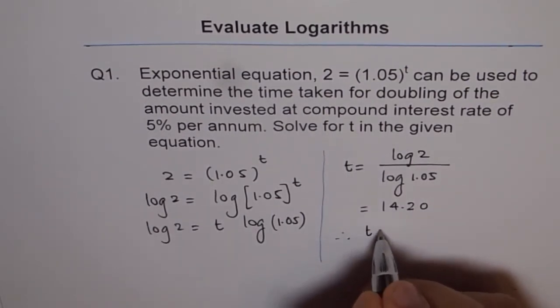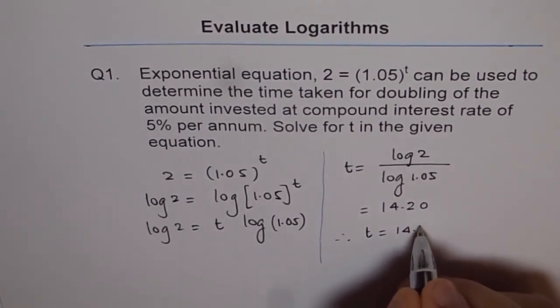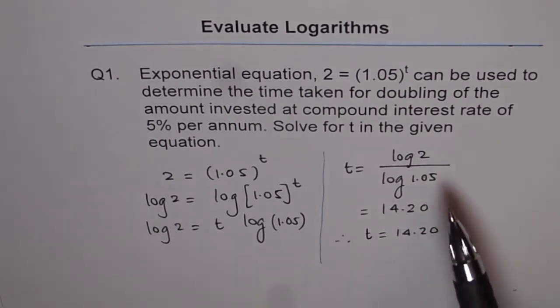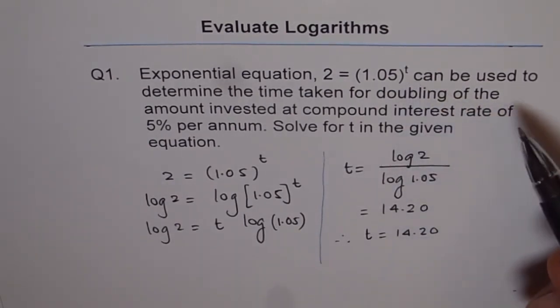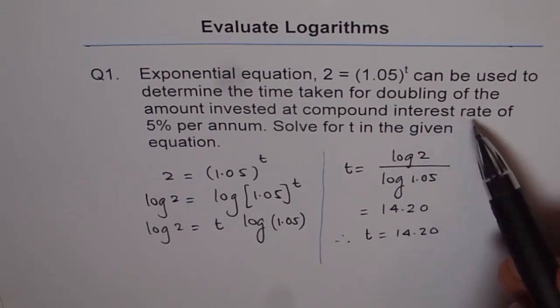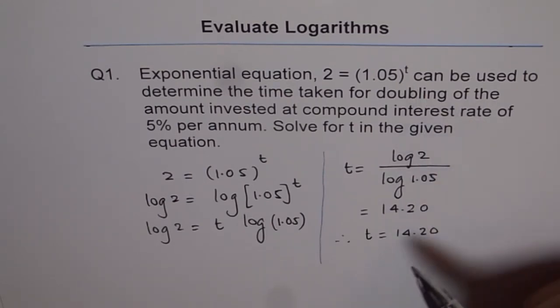Therefore t = 14.20. If it is an example, here we only told you that this kind of formula can be used for doubling of investment where t is in years, then you have to write the unit as so many years.